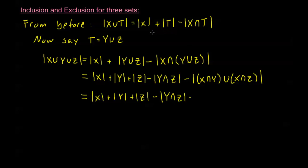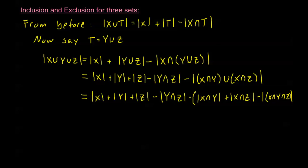Now I'm going to use my original formula again because I have a union between two sets — those sets happen to be intersections, but that's fine. So following the formula, the order of (X intersection Y) union (X intersection Z) equals the order of X intersection Y plus the order of X intersection Z minus the order of their intersection. Since intersecting X twice is the same as intersecting it once, I only need one X in the three-part intersection.